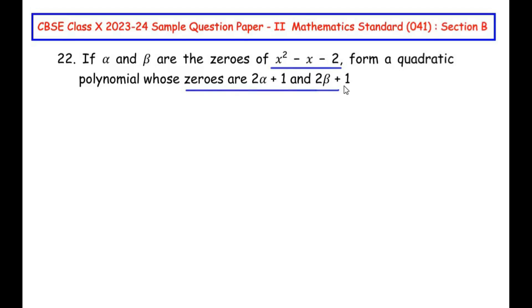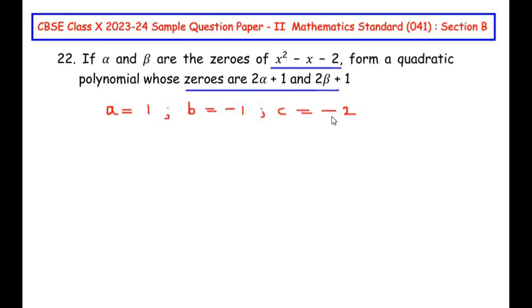They have given a hint that alpha and beta are the zeros of this polynomial, so let us relate the zeros with the coefficients. The coefficient of x squared is a, which is 1 by default. The coefficient of x is b, which is negative 1, and c is the constant, which is negative 2. Now let us write the sum and product of the zeros.